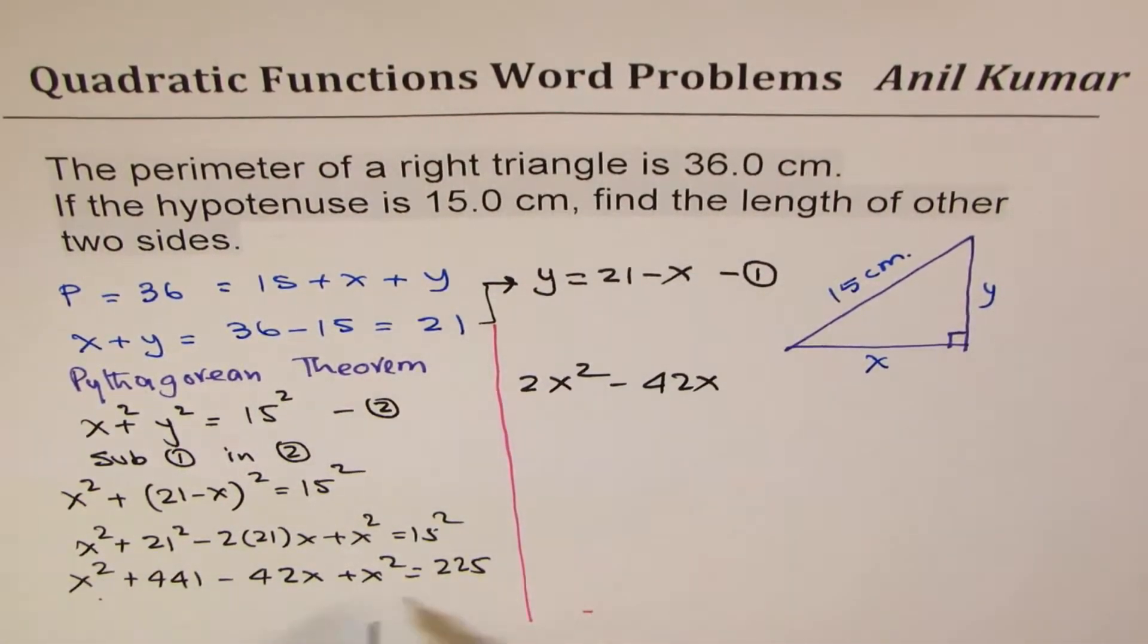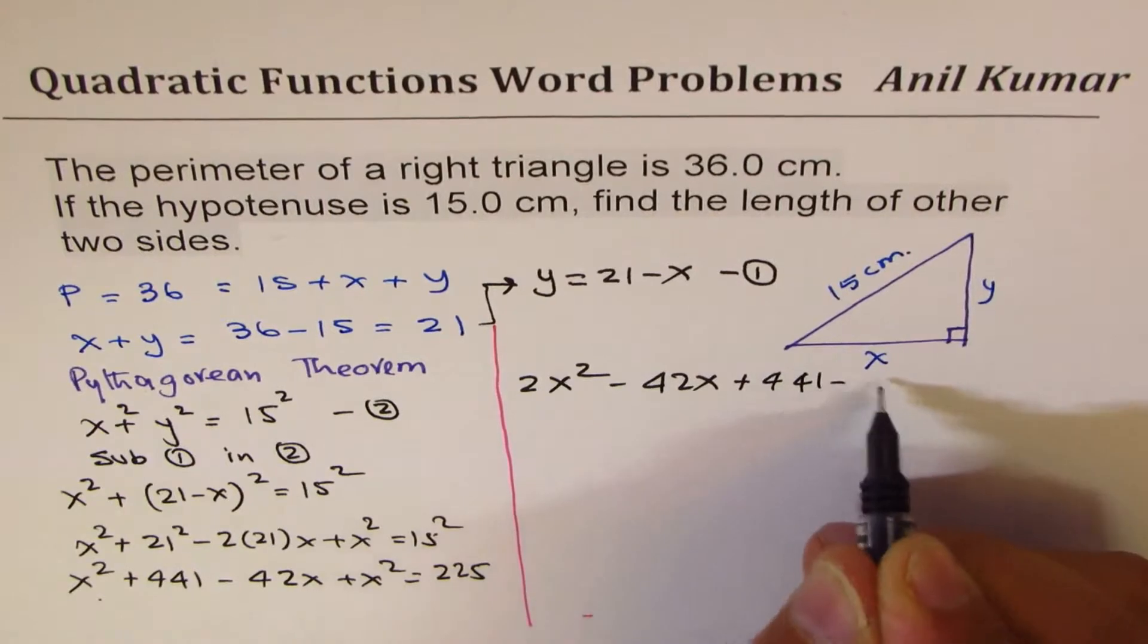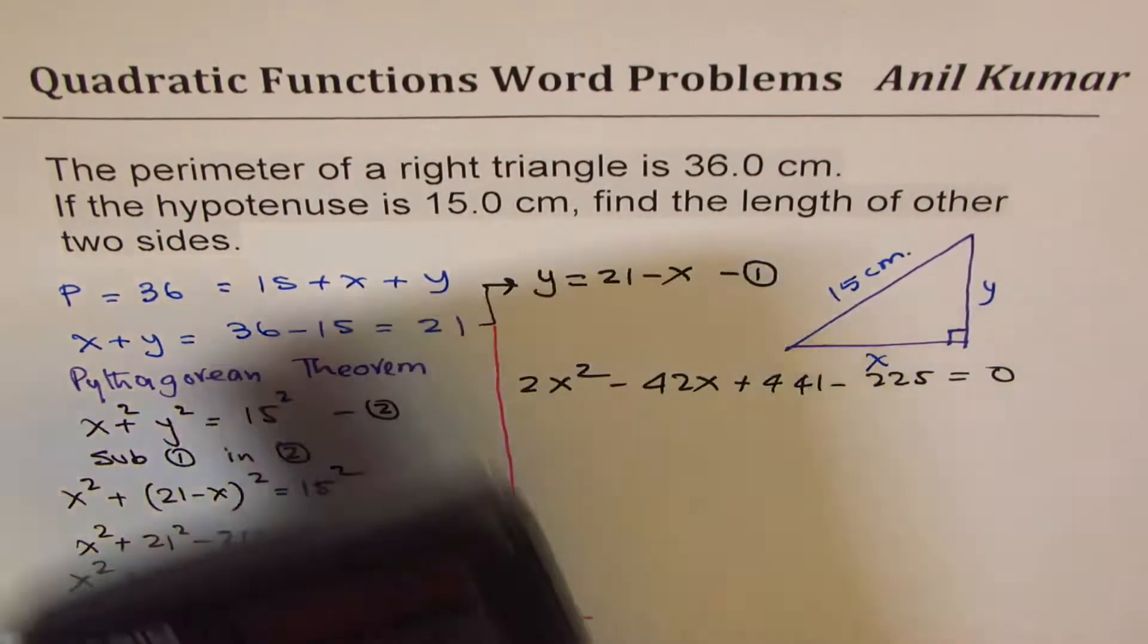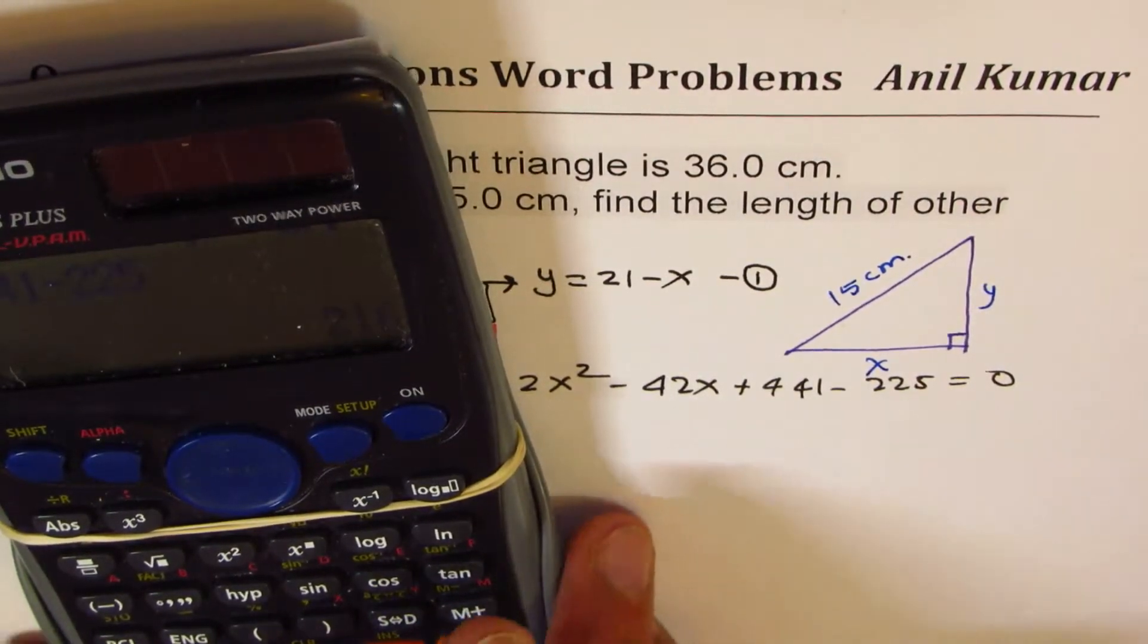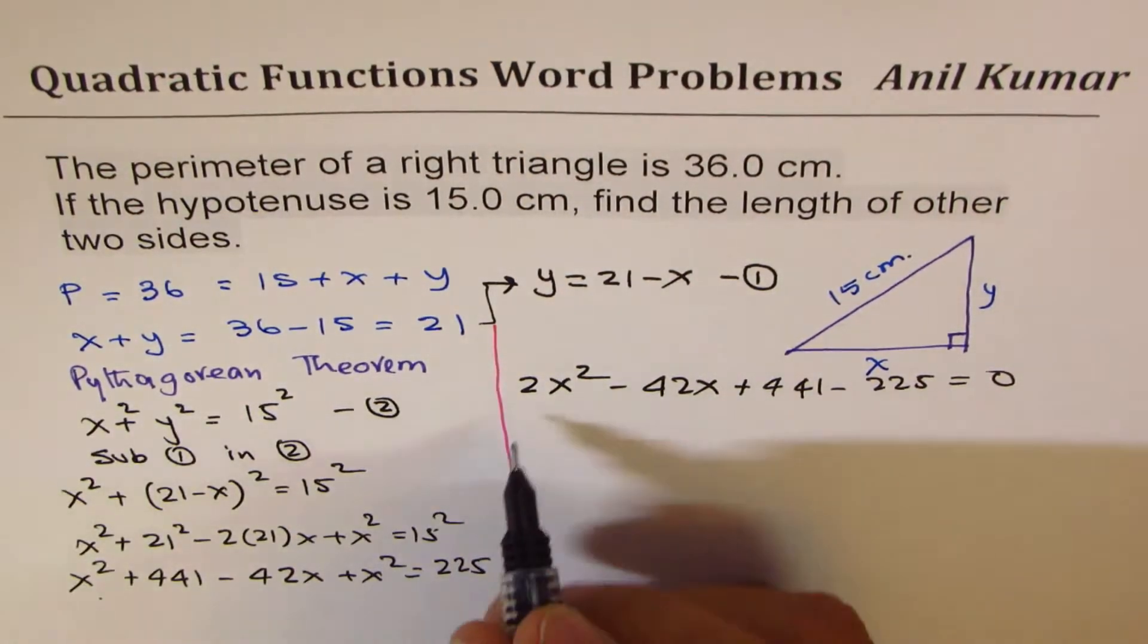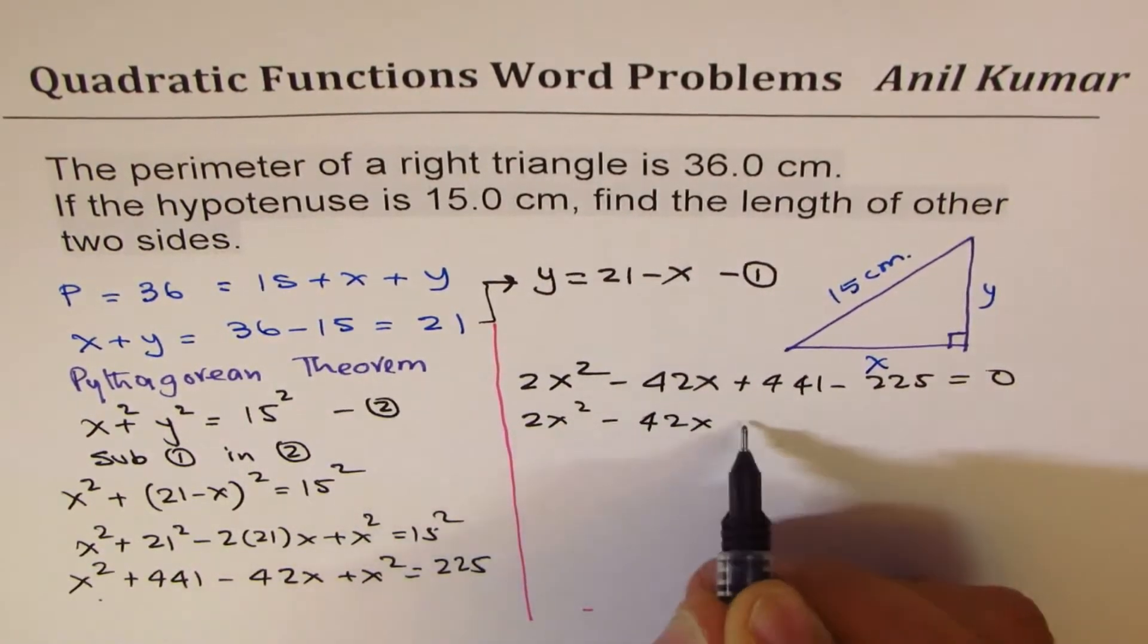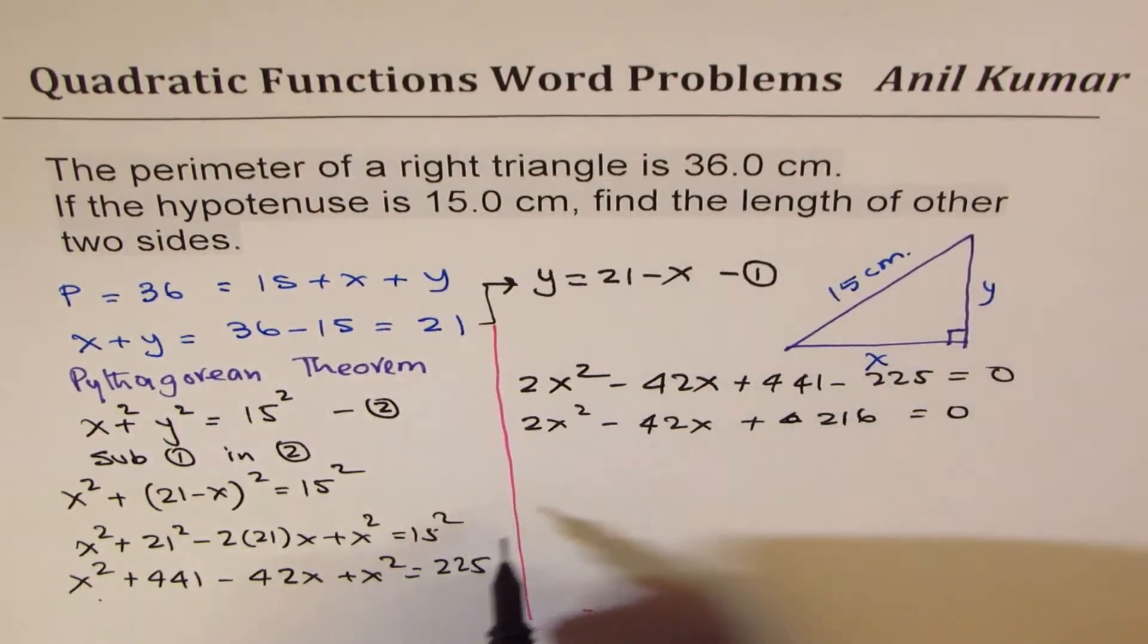Now 441 minus 225 is 216, so we can write this as 2X square minus 42X plus 216 equals to 0. You can take 2 common so we get X square minus 21X and that gives you 108 equals to 0.